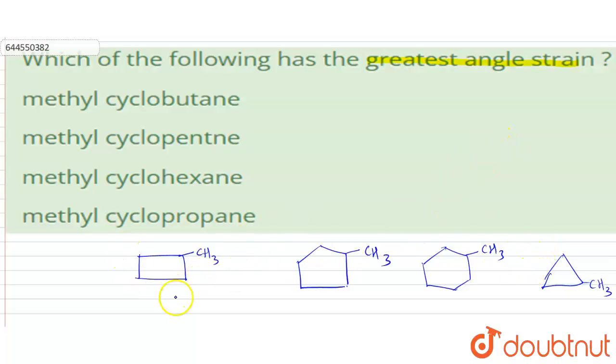This one is having four carbons, this is having five, this is six, and this is three. The cycle which has the least number of carbon atoms will have the greatest angle strain.